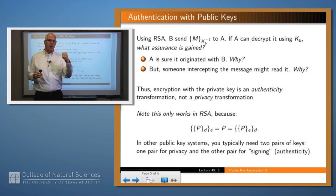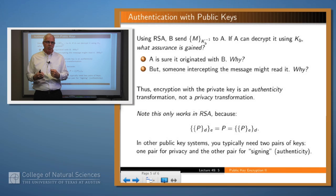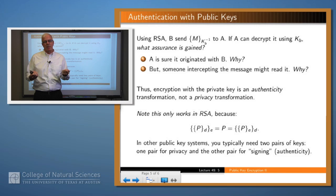On the other hand, suppose that A receives a message encrypted with B's private key. In this case, A does know that the message came from B, because no one besides B has that private key. If A can decrypt with B's public key, then he knows it must have been encrypted with B's private key and only B has that. So we get authentication. On the other hand, there's no confidentiality, because anyone might have B's public key and eavesdrop.